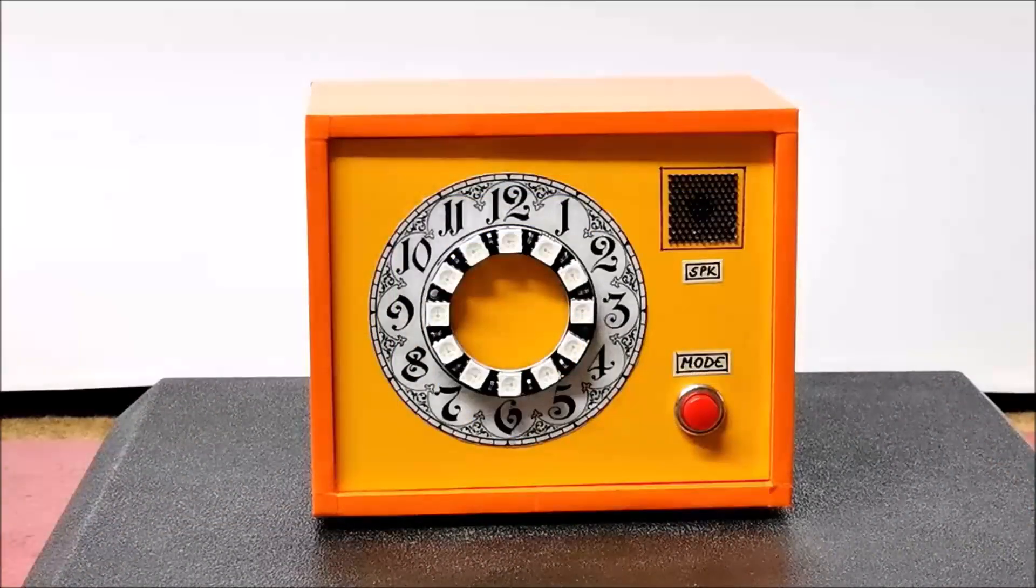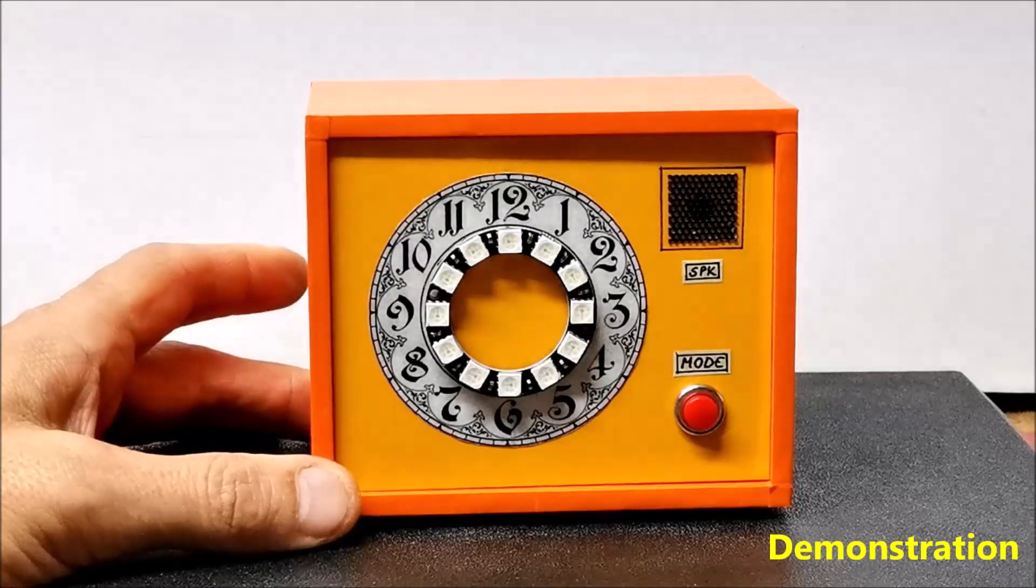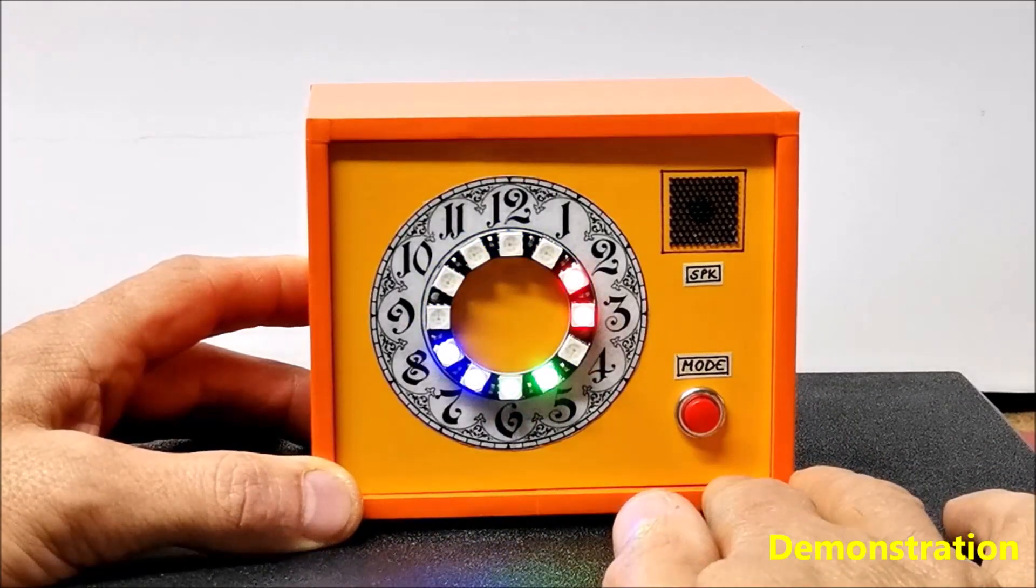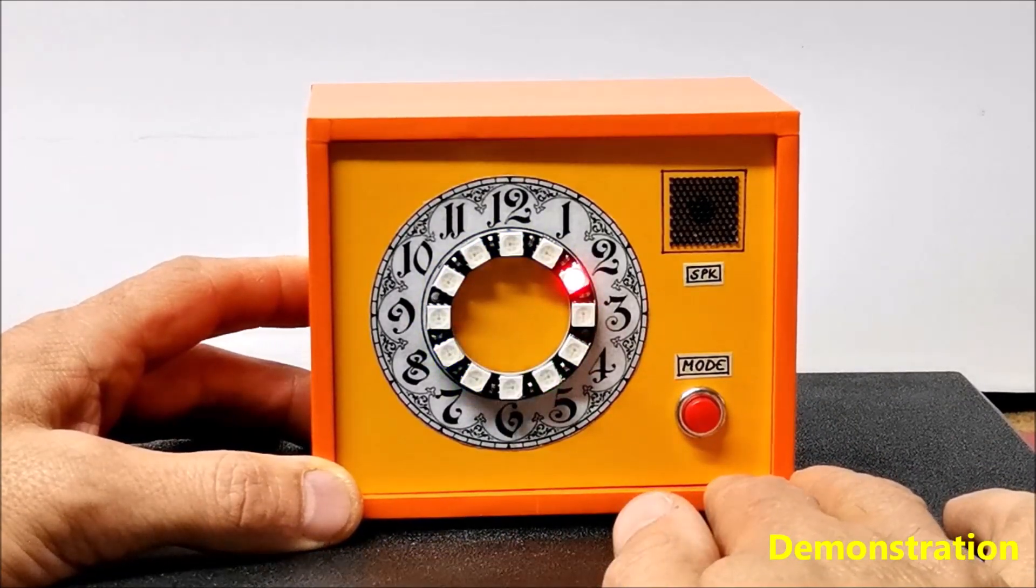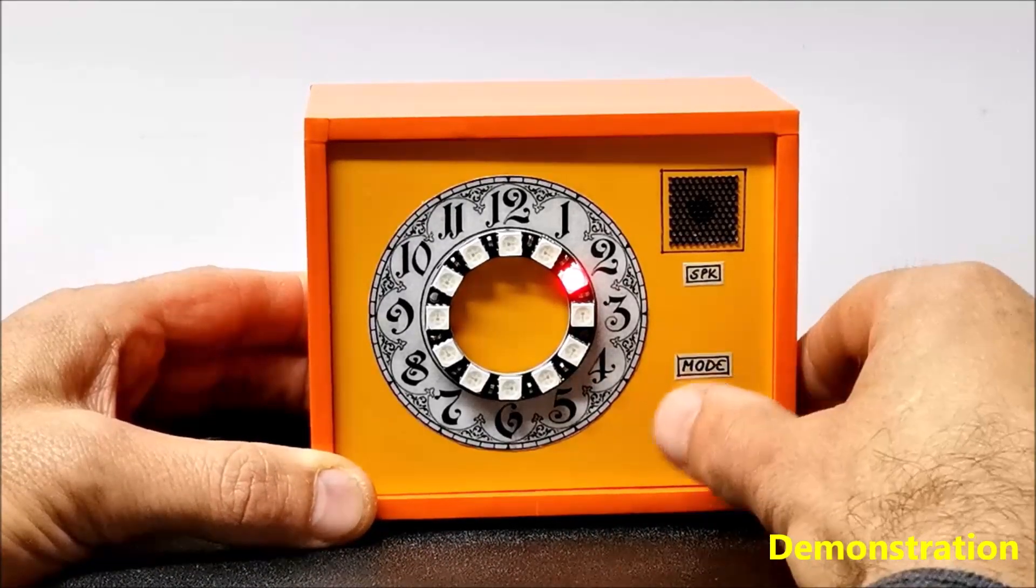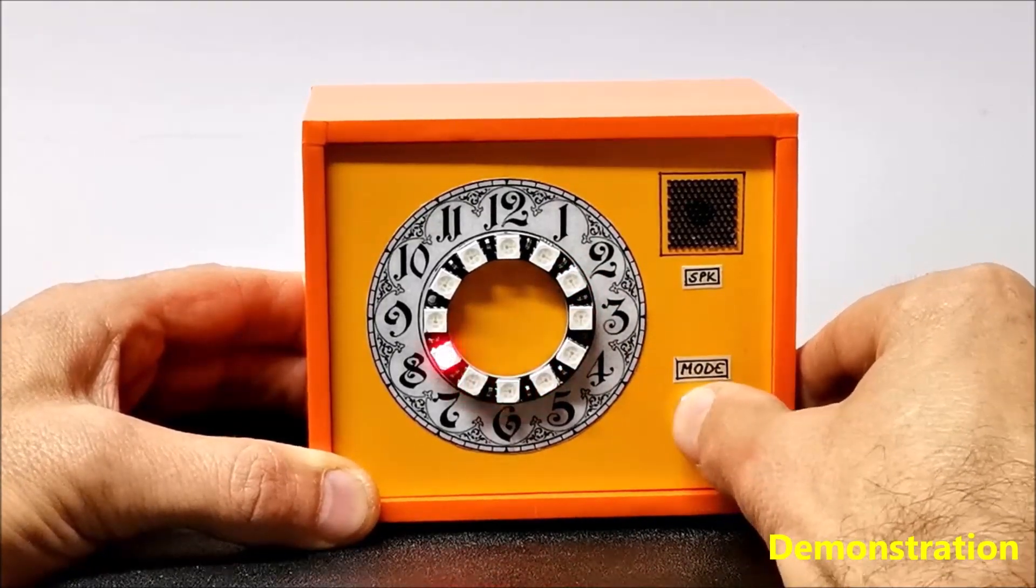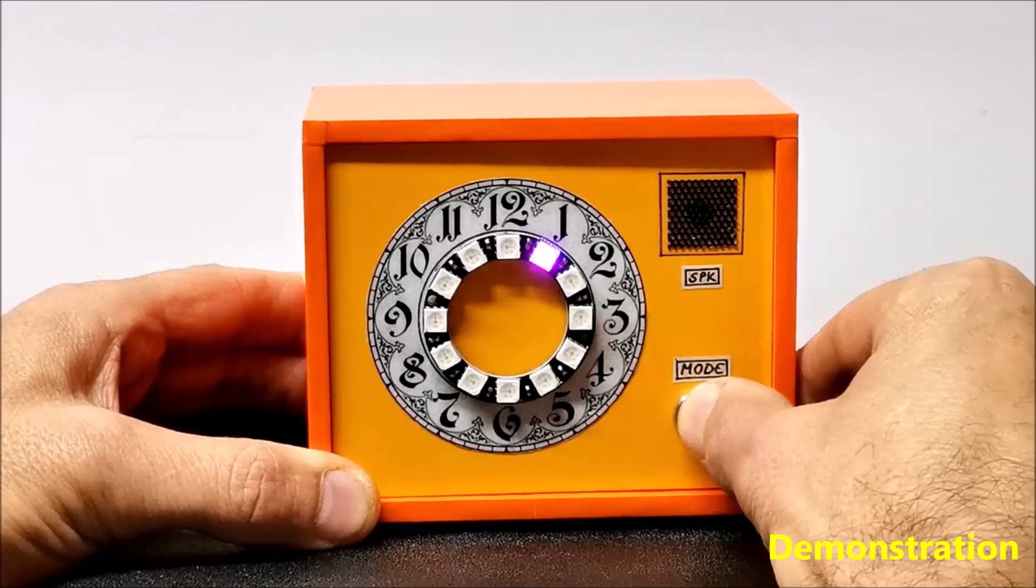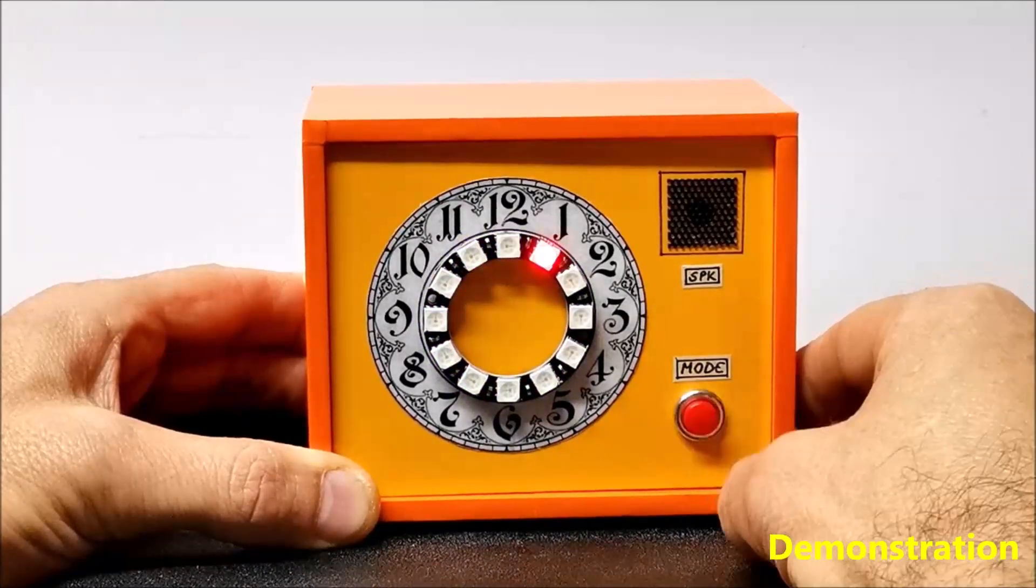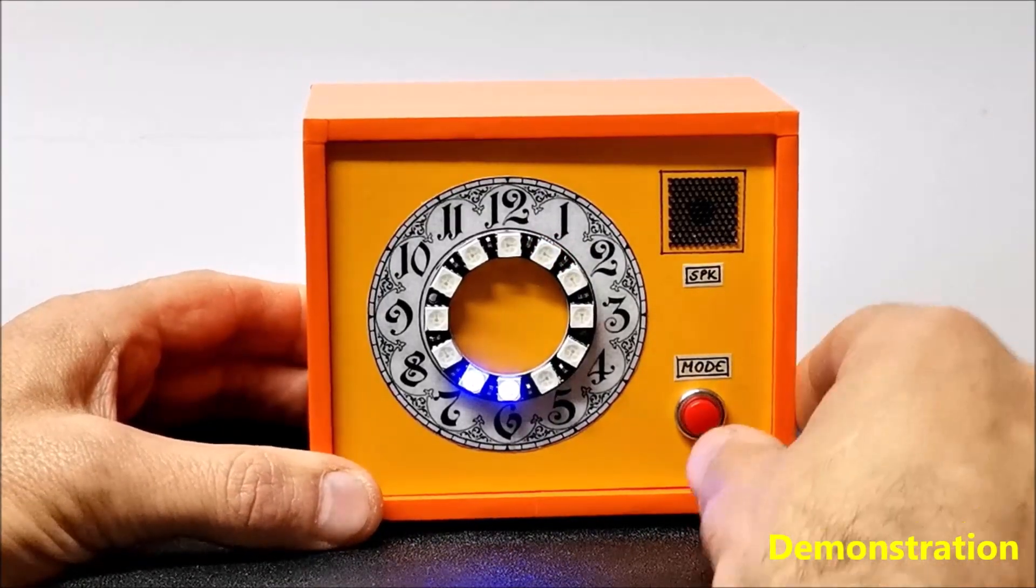And now let's see how the device works in real conditions. Immediately after switching on, after testing the diode ring, the clock starts in the current time settings position. With short clicks on the button, we set the hour which is the red or pink LED AM or PM. When we set the hours,